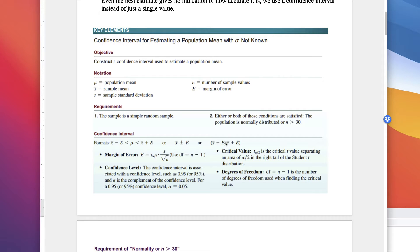The margin of error formula is a little different than for the proportion. It's a critical t-value t sub alpha divided by 2, times the standard deviation divided by the square root of n. We use degrees of freedom, df, which equals n minus 1. We need that number in order to find our t critical value.